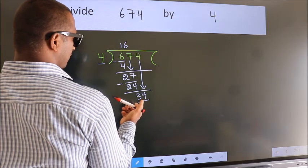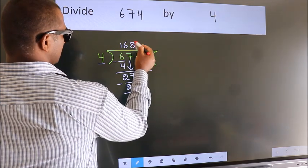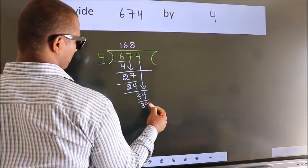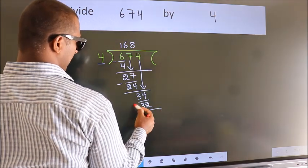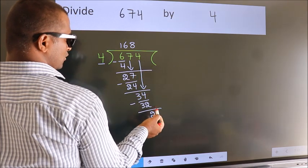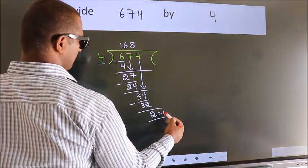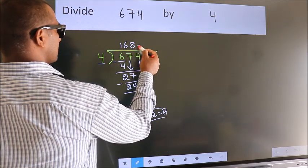A number close to 34 in the 4 table is 4×8=32. Now we subtract and get 2. No more numbers to bring down, so we stop here. This is our remainder. This is our quotient.